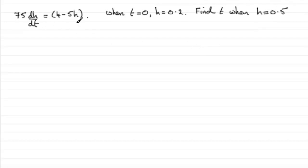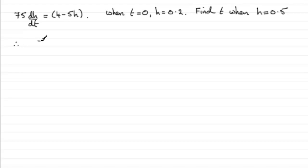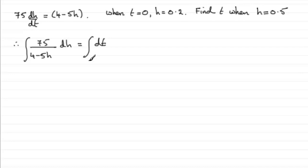To do something like this, what we've got to do is separate the variables — in other words, get all the h's on one side and all the t's on the other side. So if we divide both sides by 4 minus 5h and multiply both sides by dt, we get 75 over 4 minus 5h dh equals dt. We must now integrate both sides, so slipping an integral around each side — we've now separated the variables.